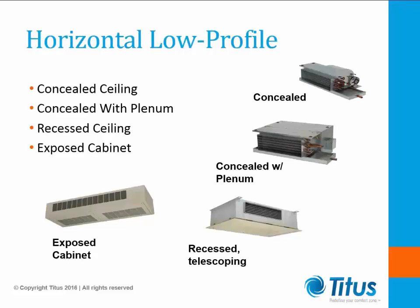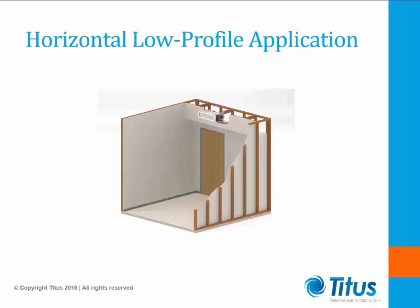Standard horizontal low-profile fan coils follow a standard construction type. You'll have concealed units — coils, duct collars, drain pans, and fans meant to go into architectural enclosures. Concealed units with a return housing over the fan allow the units to be ducted above a ceiling. Finally, exposed cabinets are meant to be installed inside the zone, and some manufacturers offer recessed telescoping units meant to be installed in an architectural enclosure where the bottom panel is screwed in place as an access door. A typical installation of a low-profile fan coil unit is in the bulkhead above the door — you might have seen these in hotels or dorm rooms.